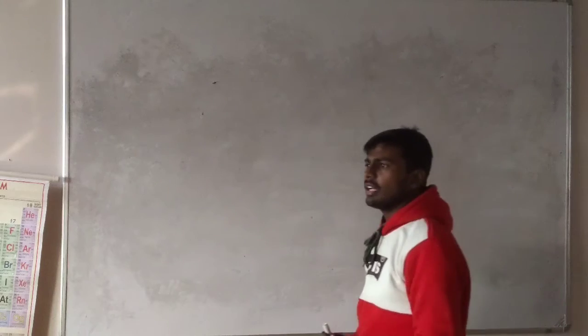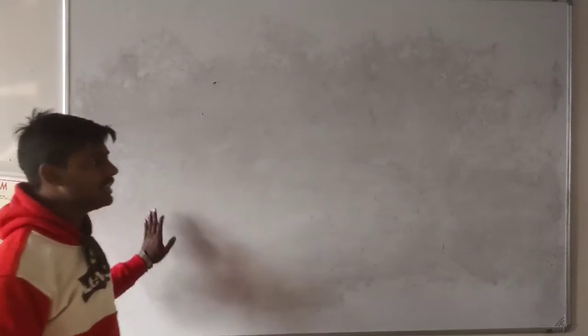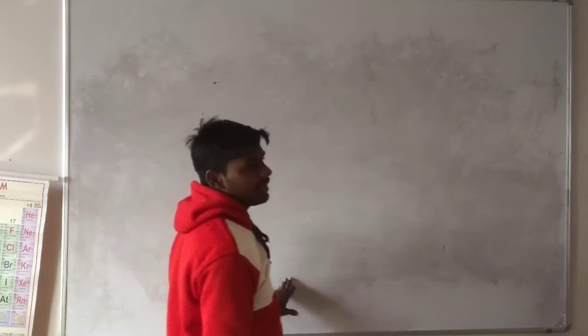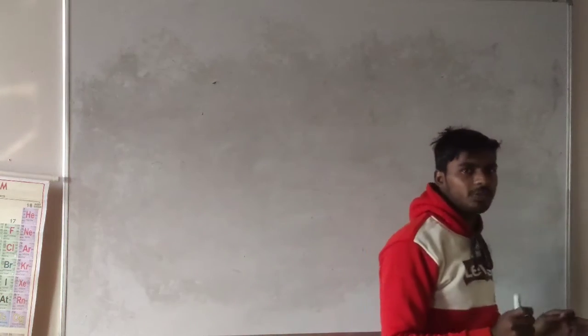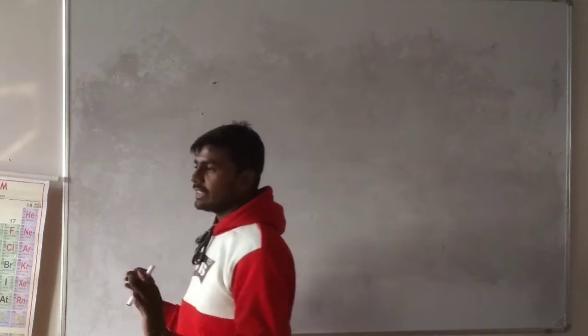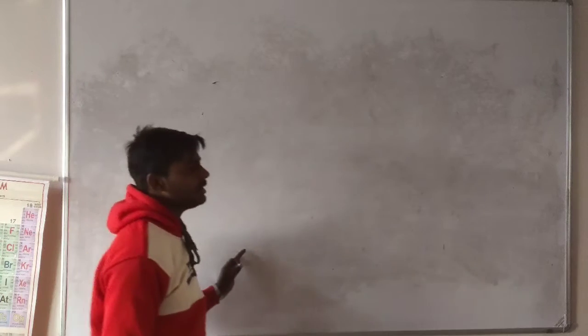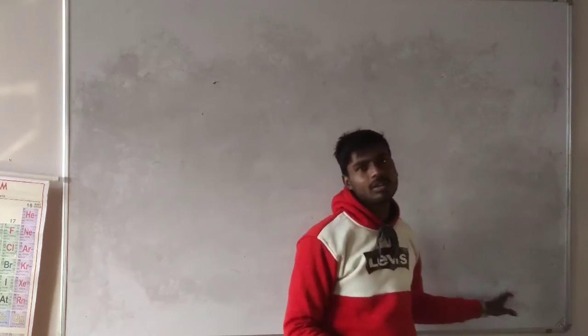Good morning class. So in last class we discussed about the kaleidoscope. Kaleidoscope is an optical device in which we use three plane mirrors kept at different angles such that the reflection takes place again and again and we can get very beautiful patterns of colors.